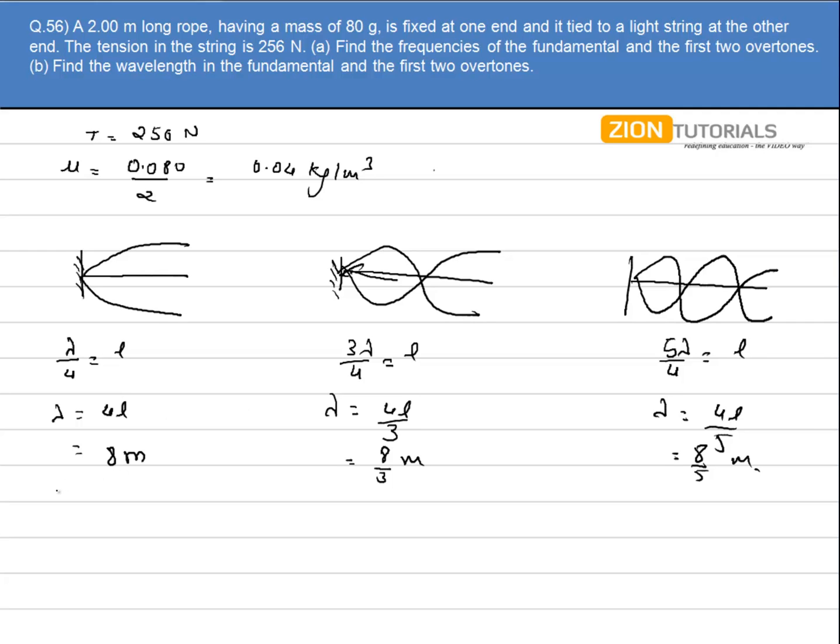Now I have to calculate the corresponding frequency. For that, let's calculate the velocity of the wave, that will be under root of T by mu. So it is under root of 256 by 0.04. So it comes out to be 16 by 2 into 10. So it is 80 meter per second.